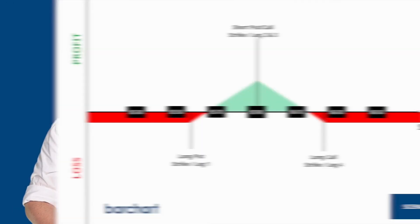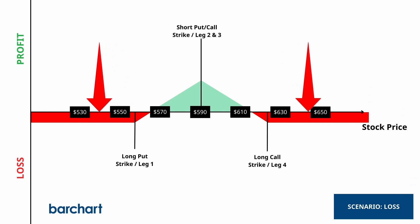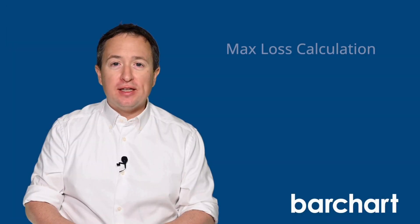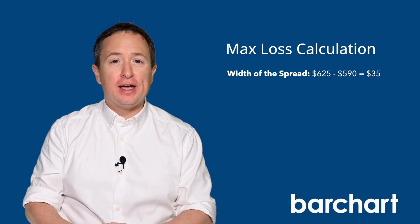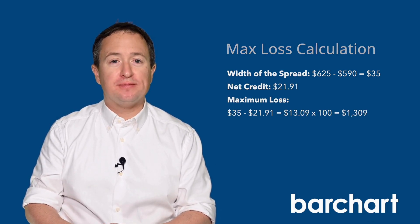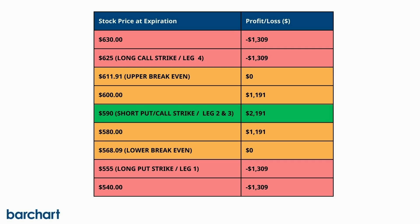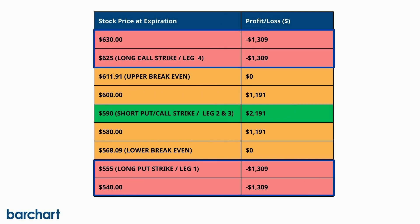On the other hand, if the price of the SPY trades beyond the long strikes at expiration, the trade will end at a maximum loss. To calculate the maximum loss, take the width of the spread — the difference between the middle strike and either of the outer strikes — then subtract the credit received at the start of the trade. Here's a profit and loss chart showing different prices at expiration. The trade results in maximum profit if the SPY trades at exactly $590. Losses begin beyond the breakeven points, with maximum losses if the ETF trades beyond either of the long strikes.